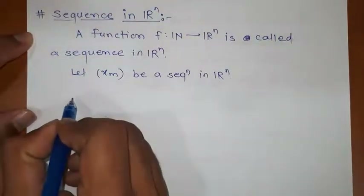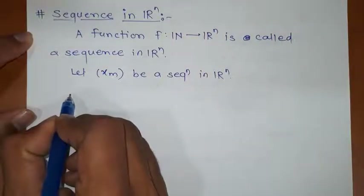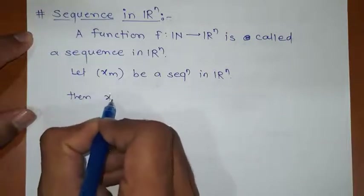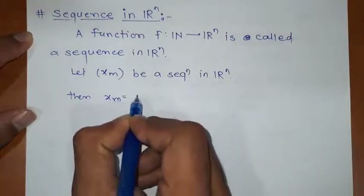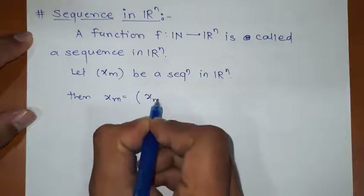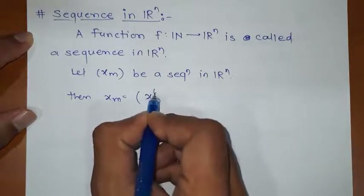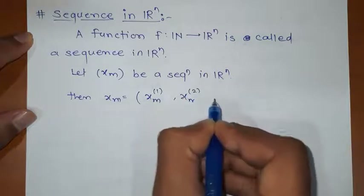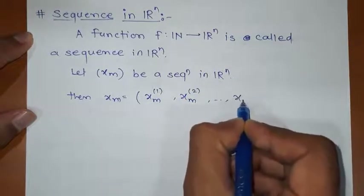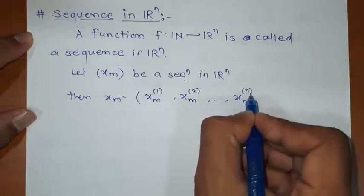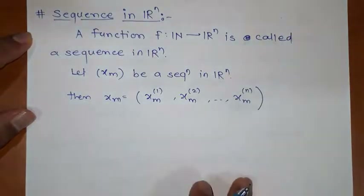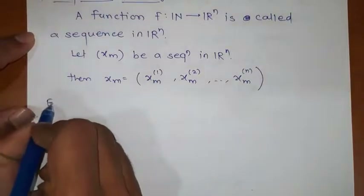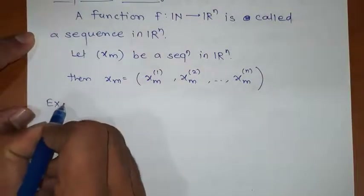So if you have a sequence xm, then xm will be written as its first component, second component, and so on. This is a sequence in Rn, so it will obviously have n number of components. Let us discuss a few examples.